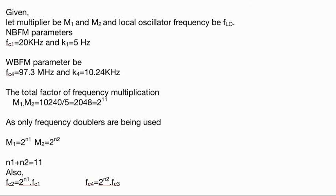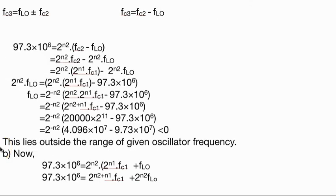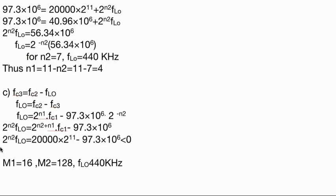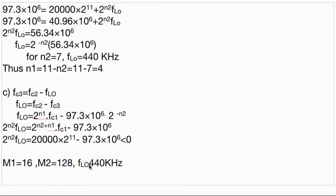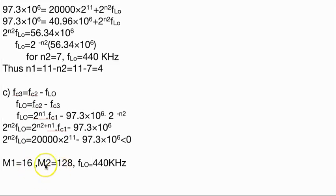It is much simpler to calculate these when you know how to calculate it. The local oscillator gets your frequency of 440 kilohertz, with M1 and M2 having different numbers.